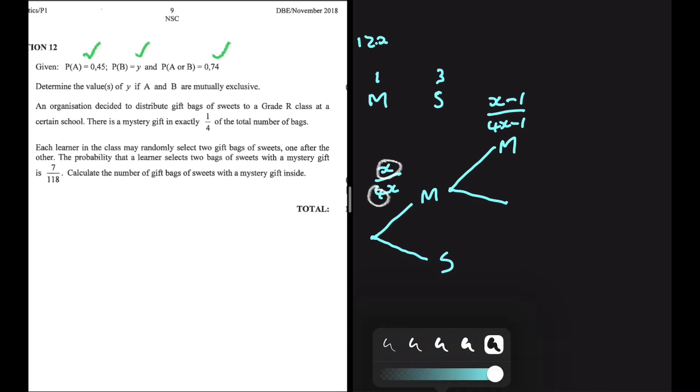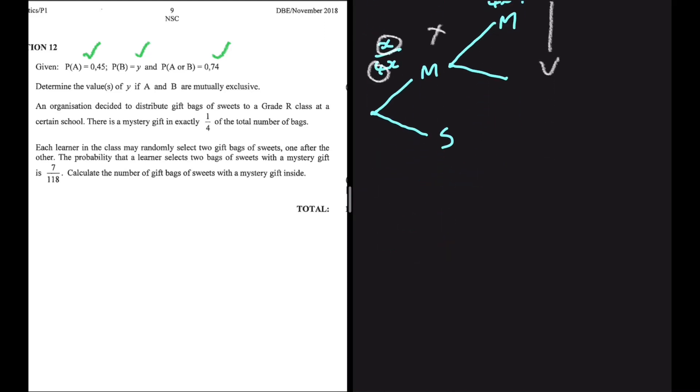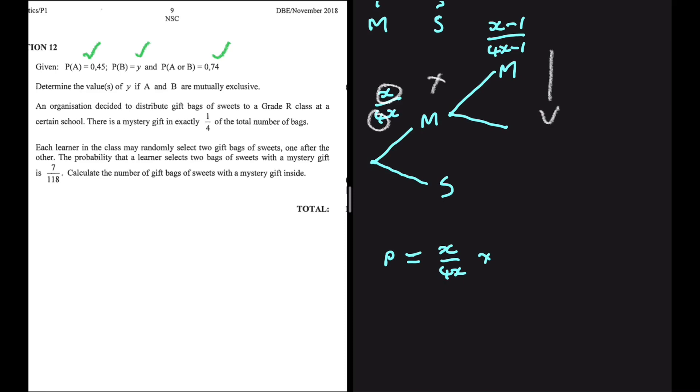When we go up the tree diagram, we multiply. And when we go down, we add. So the probability of getting two mystery gifts on your first two picks will be equals to X divided by 4X multiplied by X minus 1 divided by 4X minus 1.